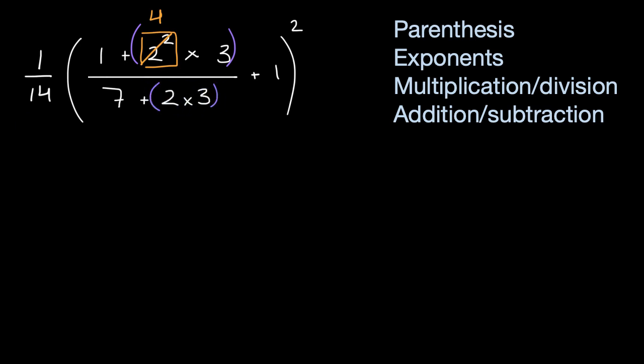So this is all going to simplify to one over 14, or one-fourteenth times, now this numerator here is going to be one plus four times three. Four times three is 12. All of that is going to be over seven plus two times three, which is of course equal to six. And then I am going to have our plus one here, and then I square everything.